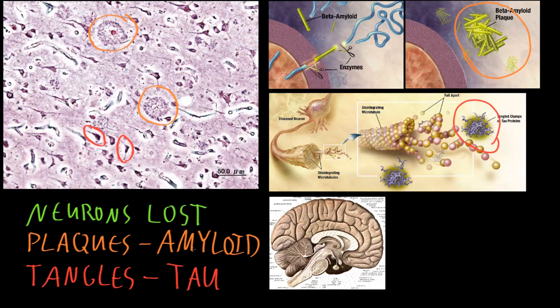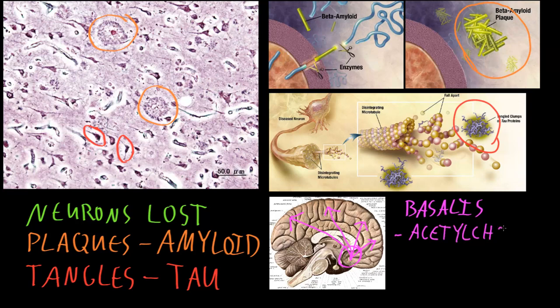Even if we fix the problems of amyloid plaques and neurofibrillary tangles, it's not yet totally clear if that would prevent neurons from being lost. A particular group of neurons at the base of the cerebrum, called the nucleus basalis of Meynert, is often lost early in the course of Alzheimer's disease. These neurons send long axons to many areas of cerebral cortex throughout the cerebrum and release the neurotransmitter acetylcholine. Loss of this diffuse acetylcholine projection appears to contribute to cognitive dysfunction, because certain medications affecting this neurotransmitter system often improve some symptoms of Alzheimer's disease.